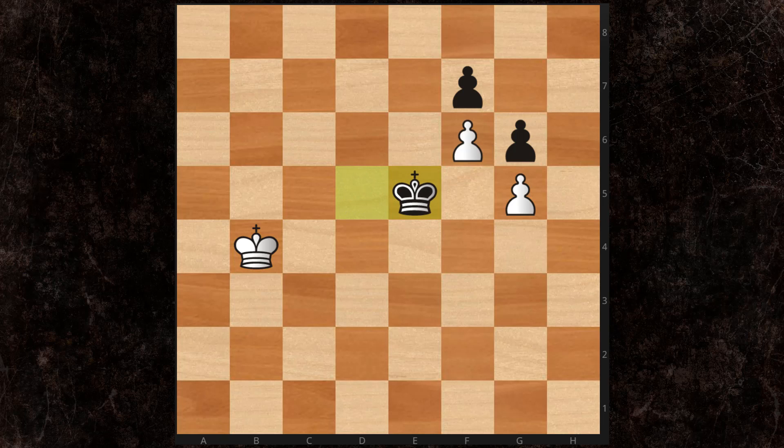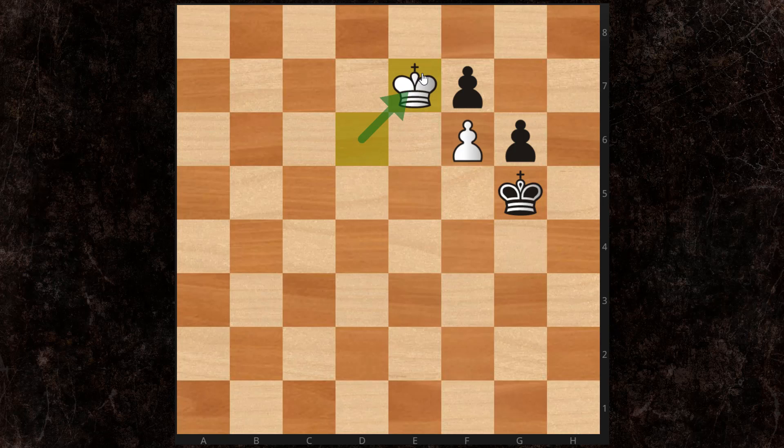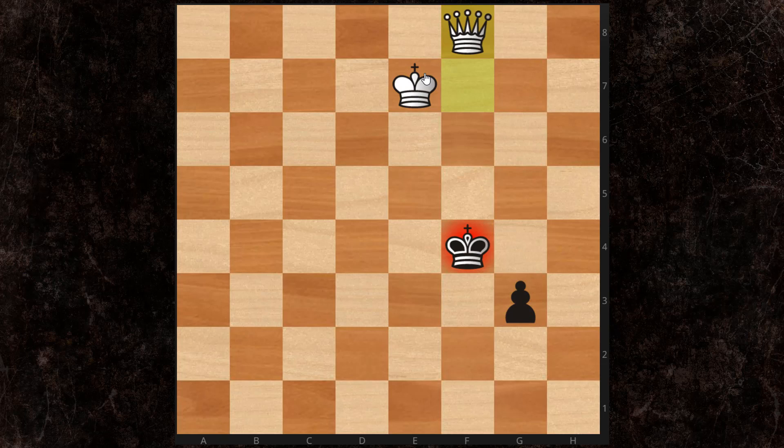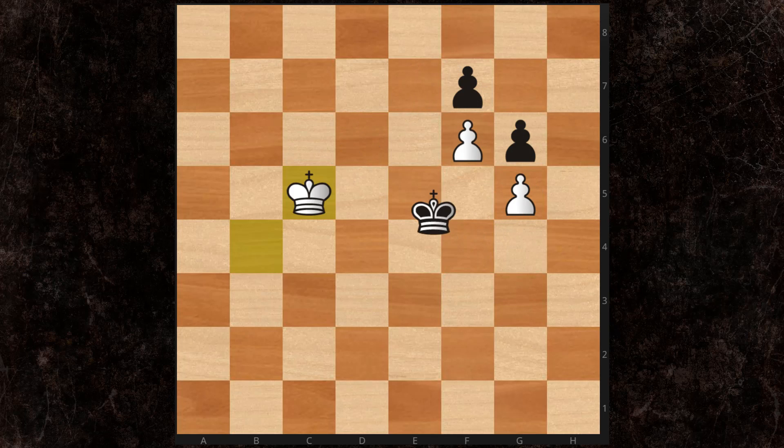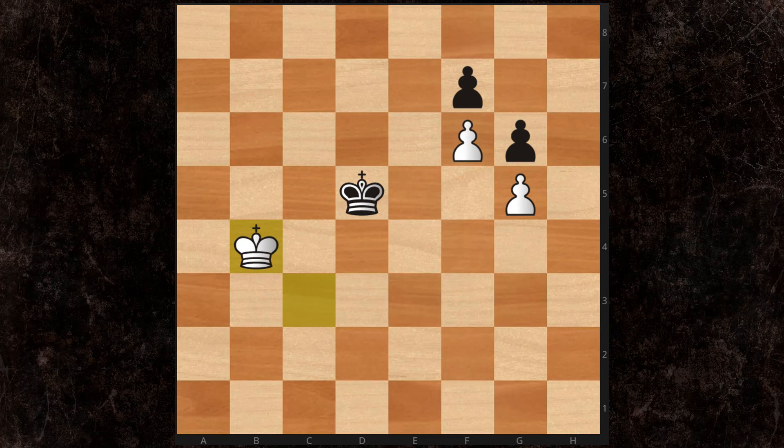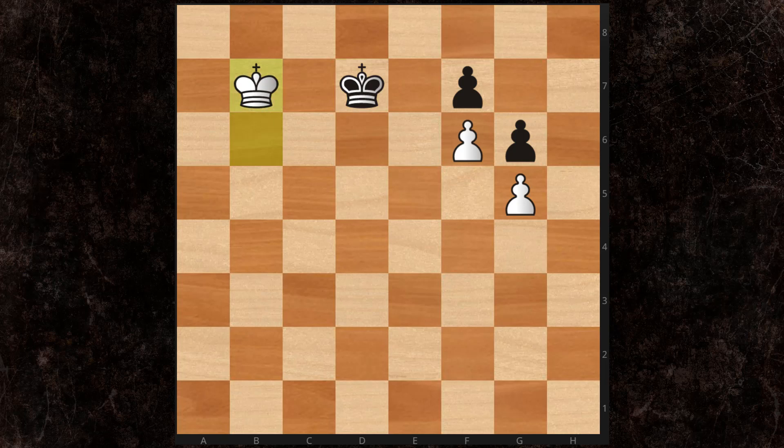So if black plays KD5, white comes in, and black may have won a pawn, but white comes in in time with KD7, wins the F7 pawn, and now he queens first. So black needs to be very careful in this position to not be too ambitious. And that's a common theme in a lot of pawn endings, is to not overestimate your own position and undervalue the potential counterplay that the opponent has. So the correct idea is to play KD4, and black just simply uses the opposition to keep the white king out.